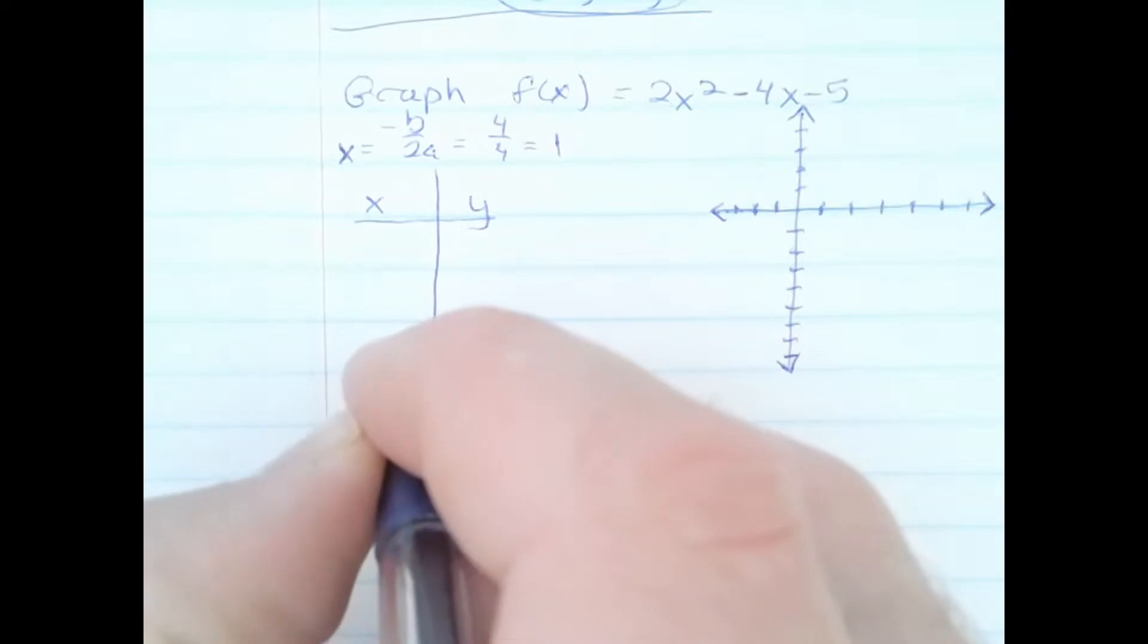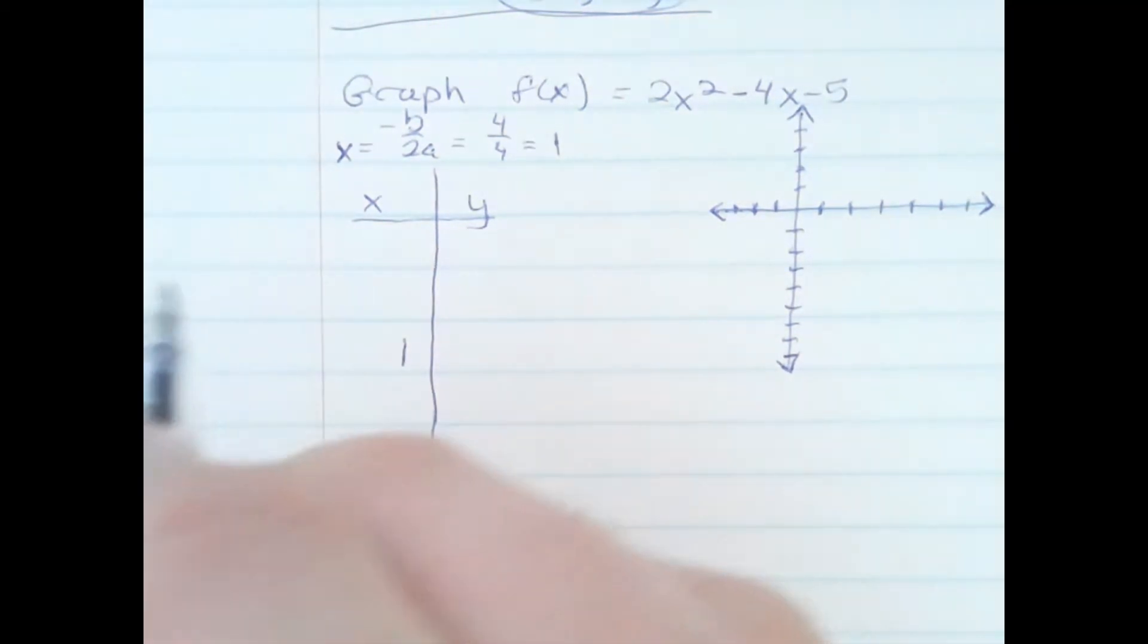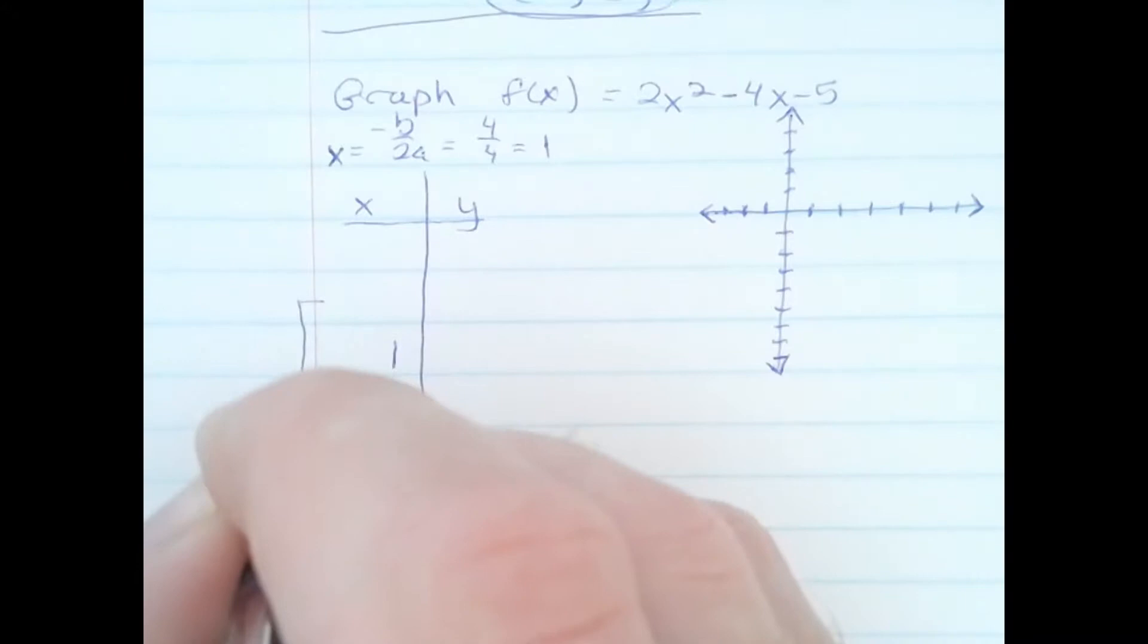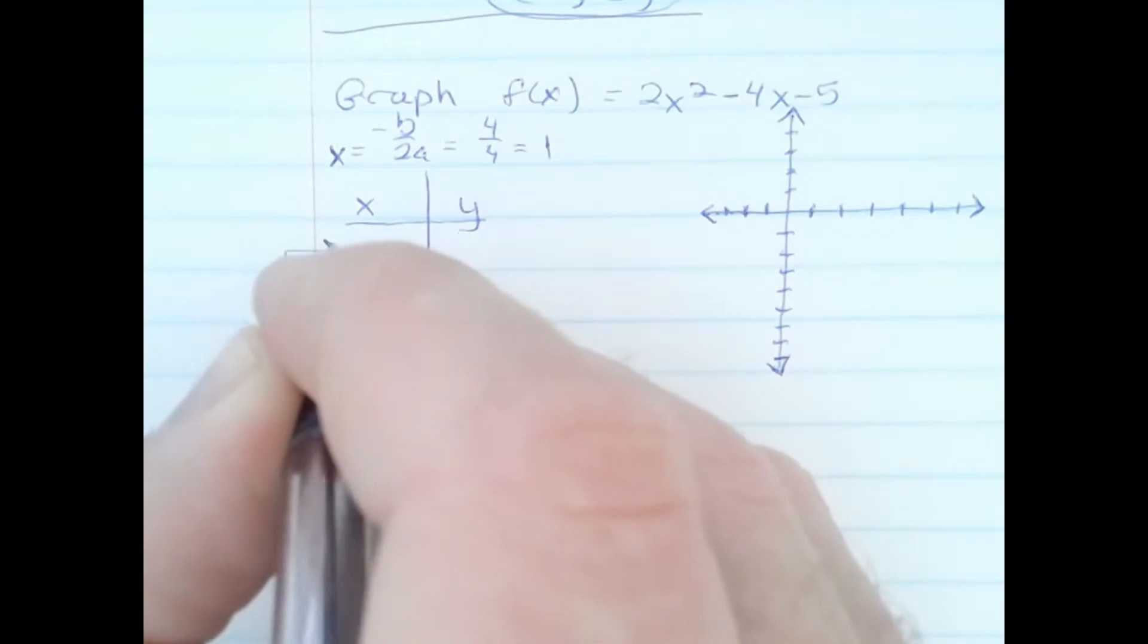Now we'll put 1 right here to represent the vertex, and it's good to note that these two y-values and these two y-values will be the same due to symmetry.